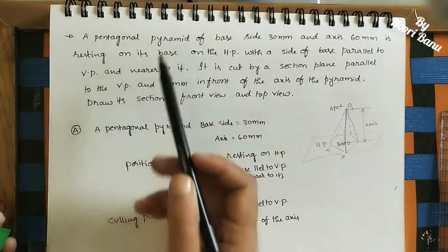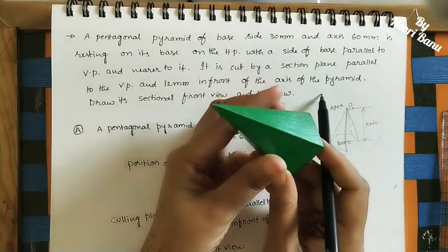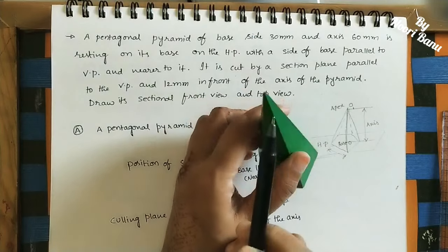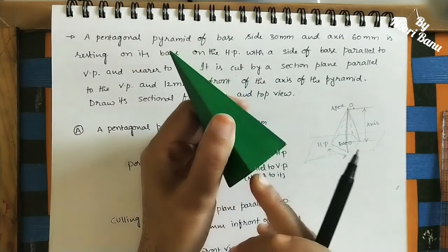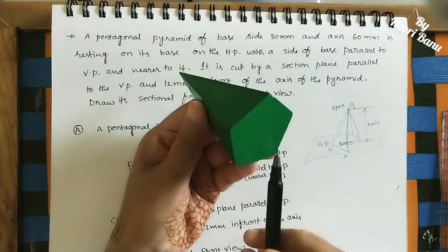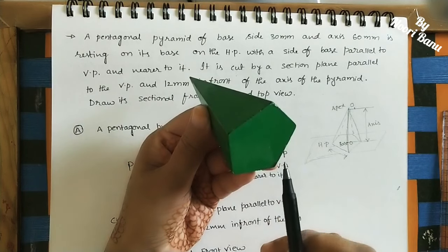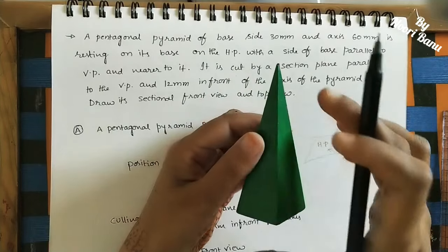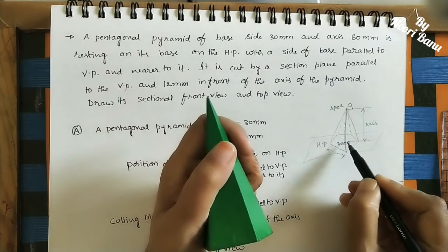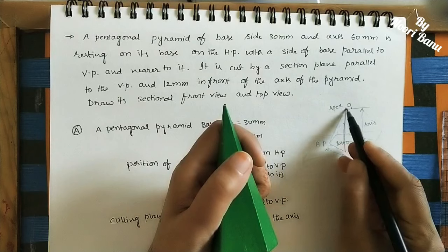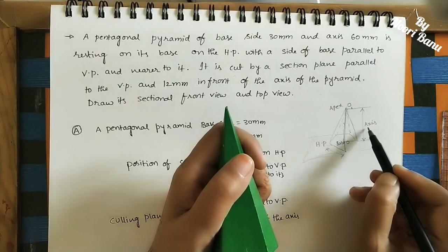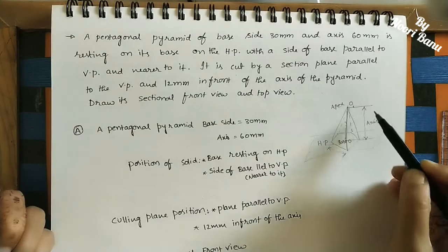We are taking the solid as a pentagonal pyramid. It has one base in the form of a pentagon, and one point called the apex. The pentagon and apex are connected with triangular faces. The height is called the axis — joining the center O of the pentagon to the apex. The distance from center to apex is the height of the pyramid.